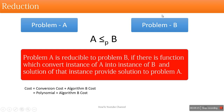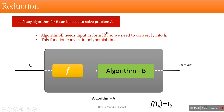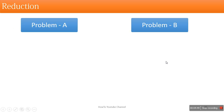The total cost of this approach is the cost of algorithm B plus the cost of the conversion function. The complexity of algorithm A equals the time taken by the conversion function — which is polynomial time — plus the time taken by algorithm B, which we also consider polynomial time.